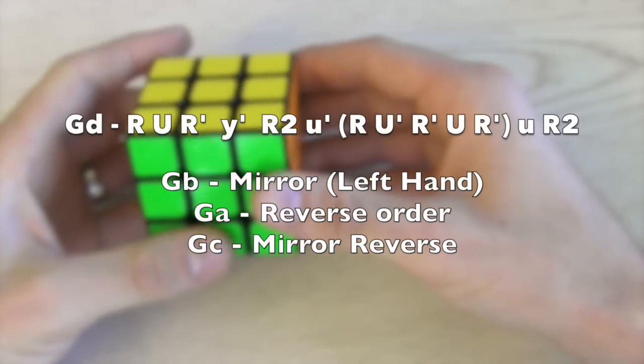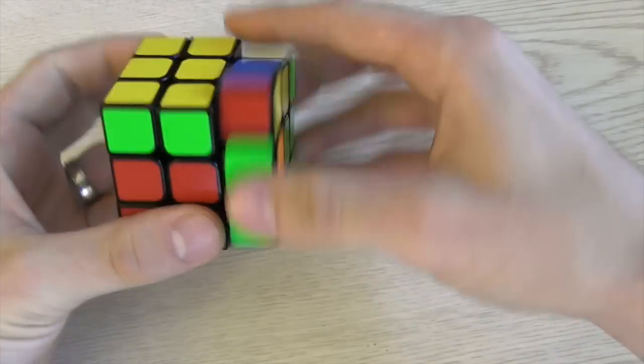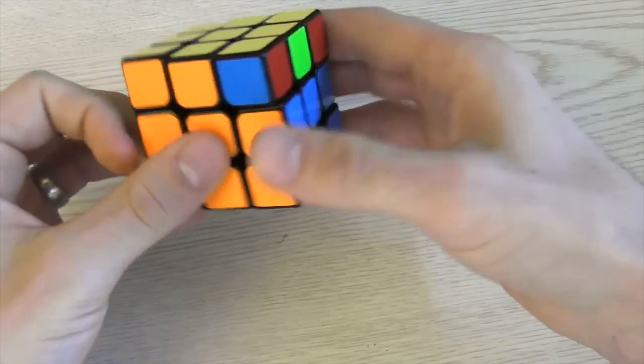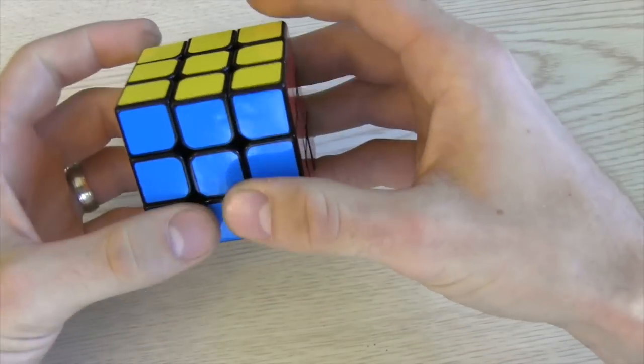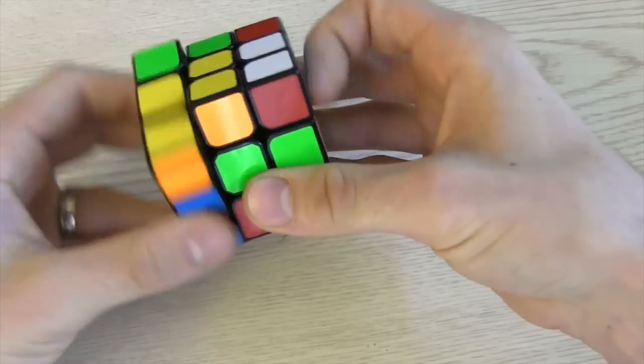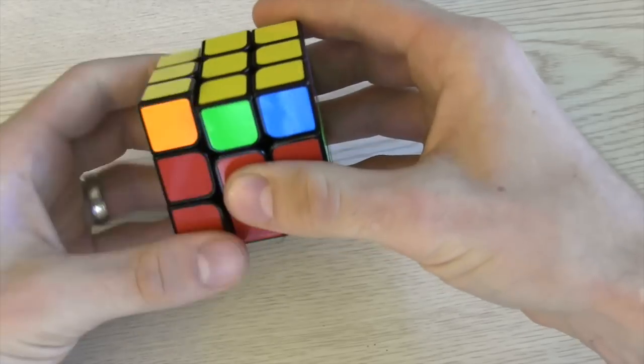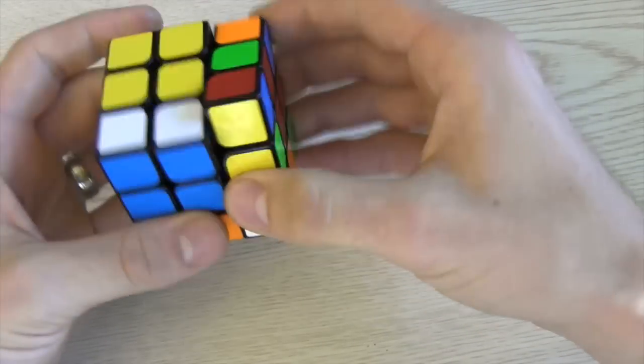Now the best thing to do is to get these into your muscle memory. What is great for practice is if you do a GA perm from a solved cube you end up with a GB perm needed to get back to the start. If you do a GC you end up with a GD and vice versa. What I would do is practice doing a GA then GB then GC and GD and just keep cycling through them.